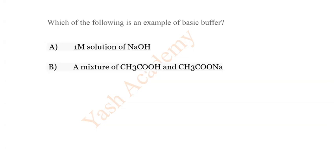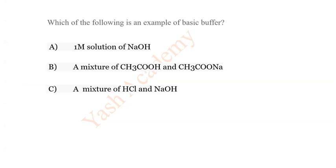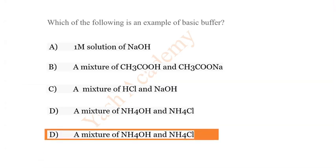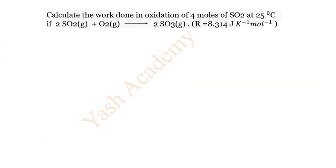Question 18: Which of the following is an example of a basic buffer? Options: A) 1 molar NaOH solution, B) A mixture of acetic acid and salt with strong base, C) A mixture of acetic acid and NaOH, D) A mixture of NH₄OH and NH₄Cl. The correct answer is D) A mixture of NH₄OH and NH₄Cl.